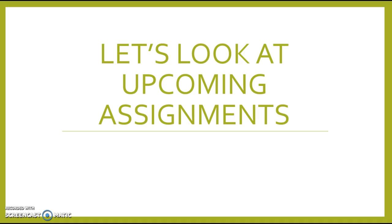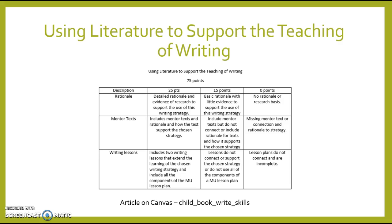Now I want to spend a little time looking at upcoming assignments — it's about to get busy. The first assignment is Using Literature to Support the Teaching of Writing. This is a picture of the rubric for the assignment. Basically, you're going to choose a writing strategy and use some mentor text to support teaching that strategy. Give your rationale and evidence from research that this is a good writing strategy, include mentor text and your rationale for using it, and include two writing lessons that enhance the learning of that writing strategy.